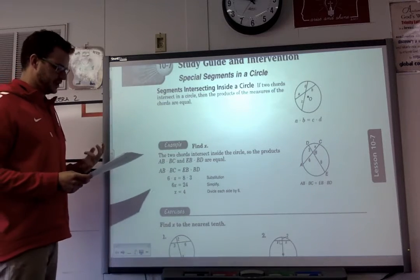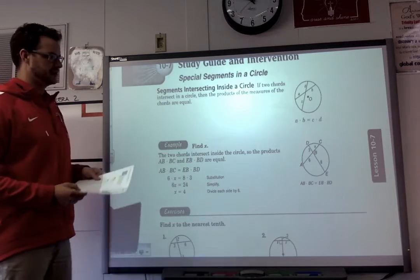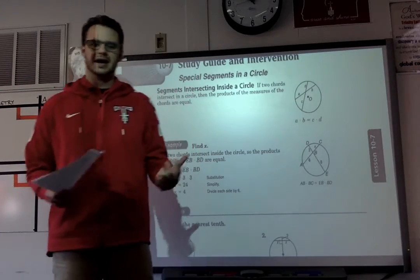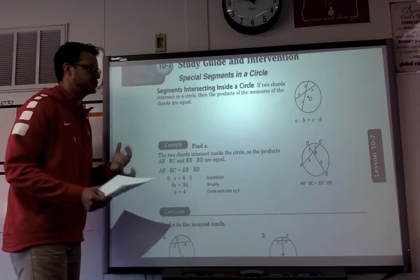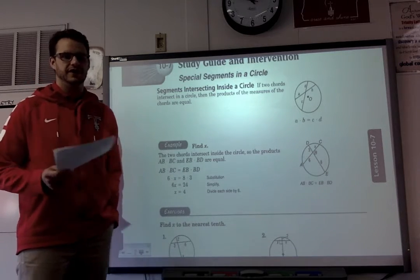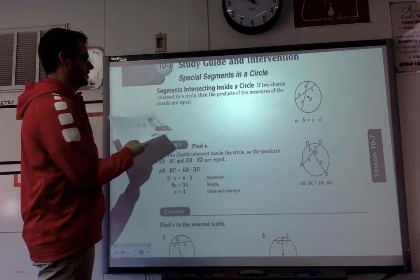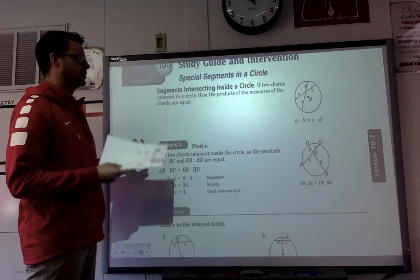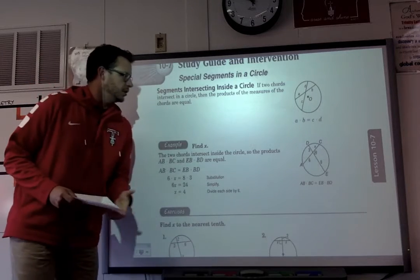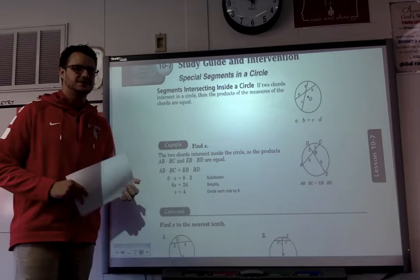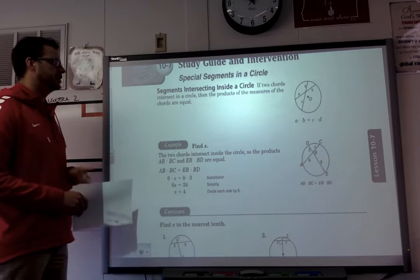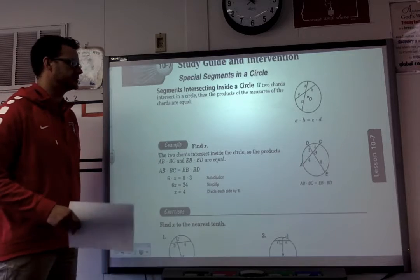This is going to be somewhat similar to what we did yesterday, working with those different chords and secants and different portions of the circle, except today instead of finding angle measures, we're going to be working with finding segment measures — the length of different segments. We're going to start with segments that intersect inside a circle. If two chords intersect in a circle, then the products of the measures of the chords are equal.